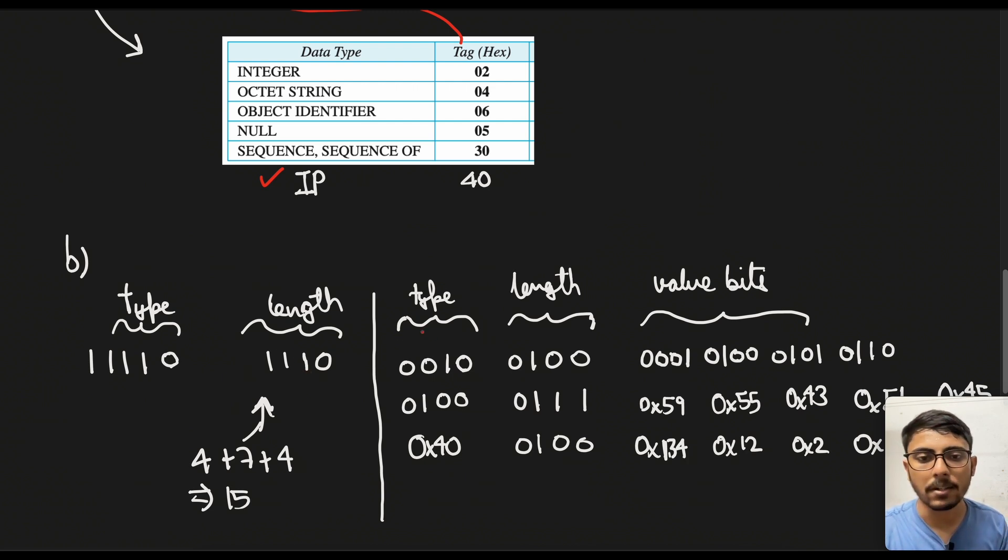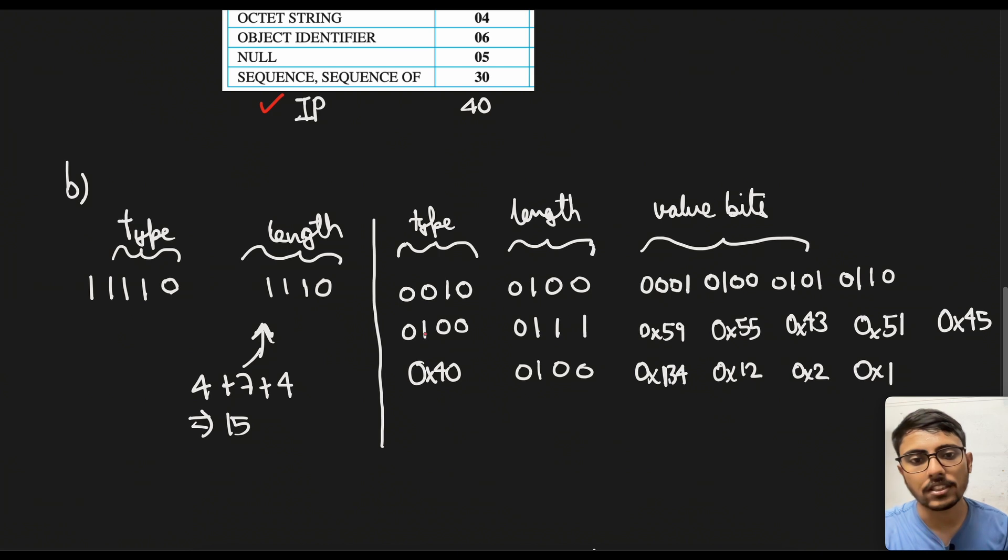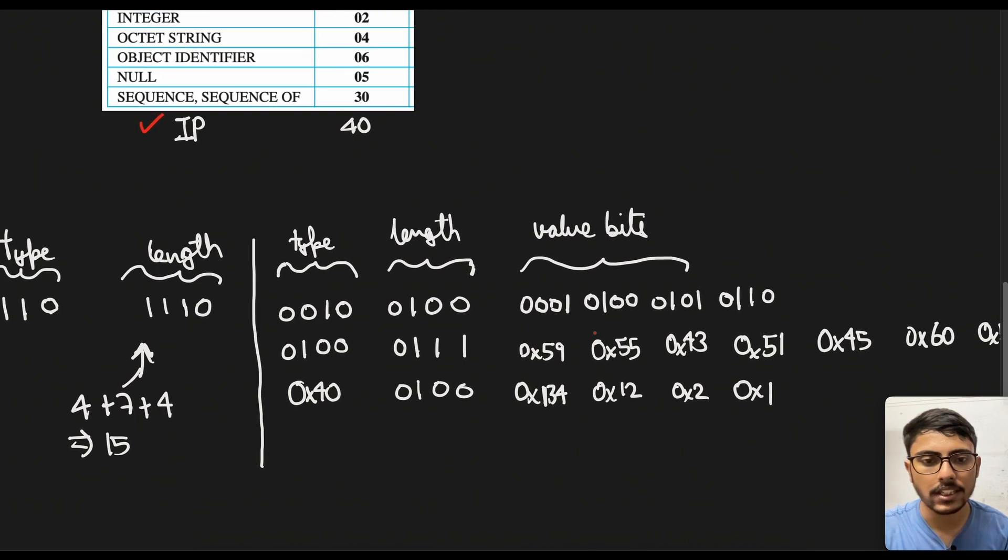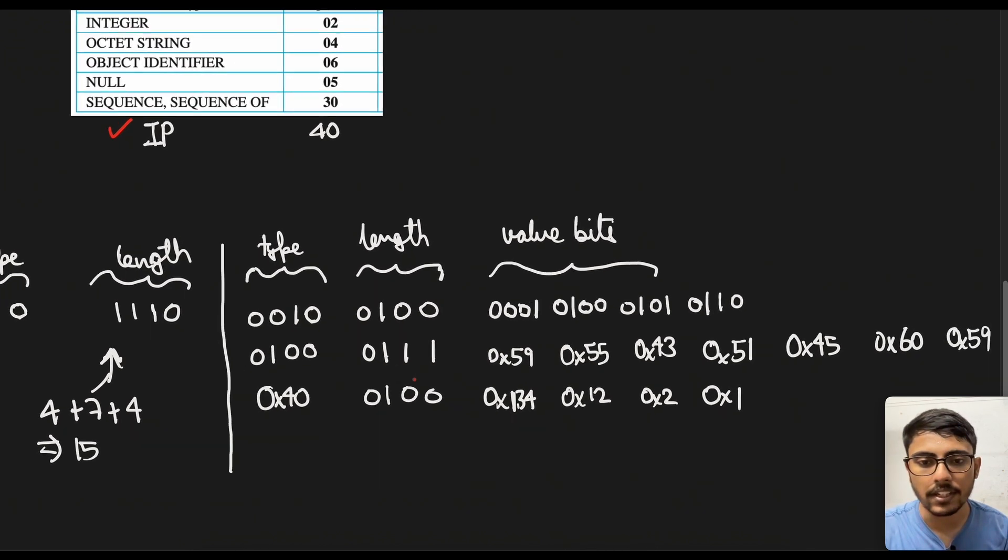And then we come to the type. So the first type is basically an integer, so then we have the length 4, and then all the integer numbers. And then for string I have just made it in hex to make it simple for you guys. And the length is basically 7 as you see here.